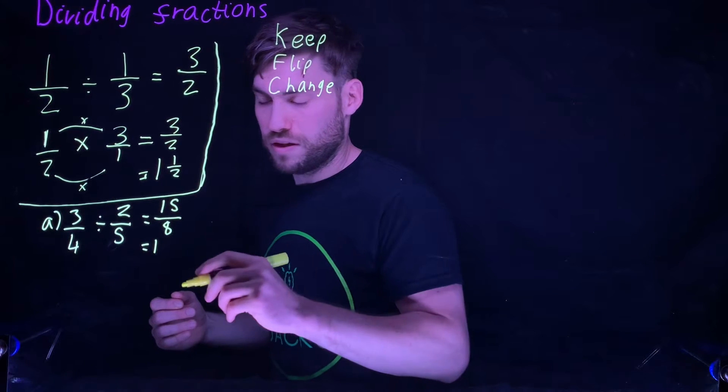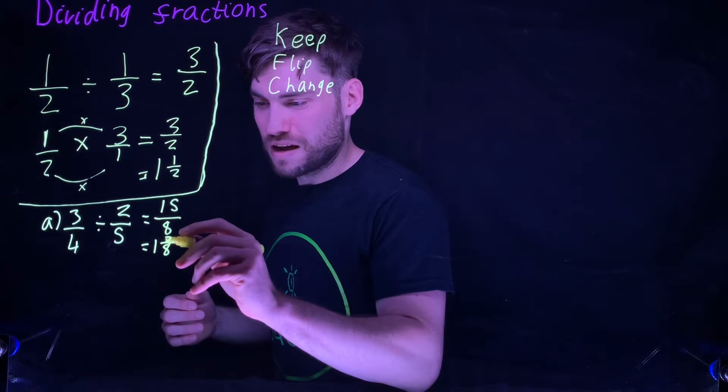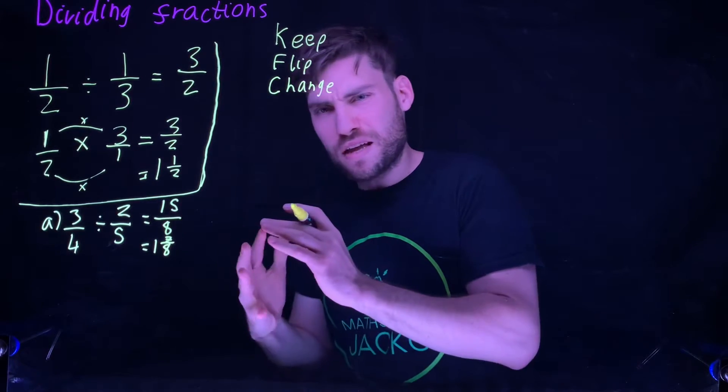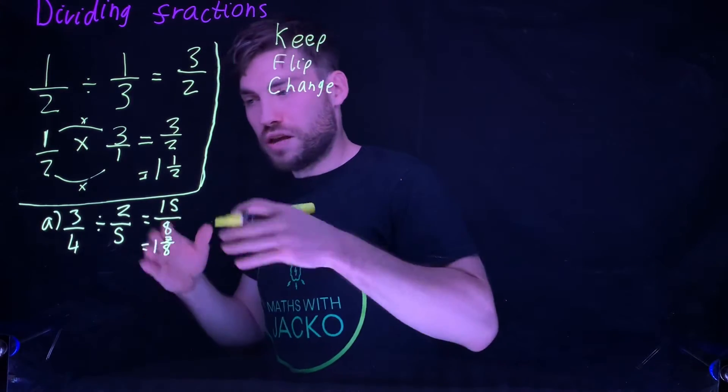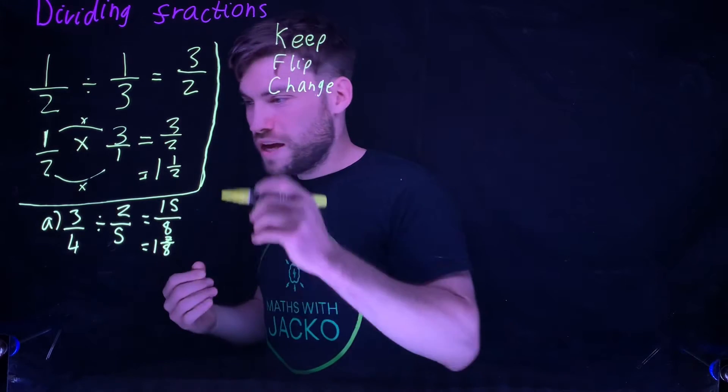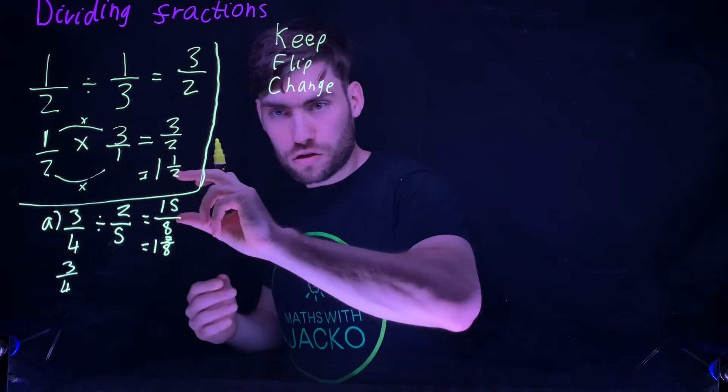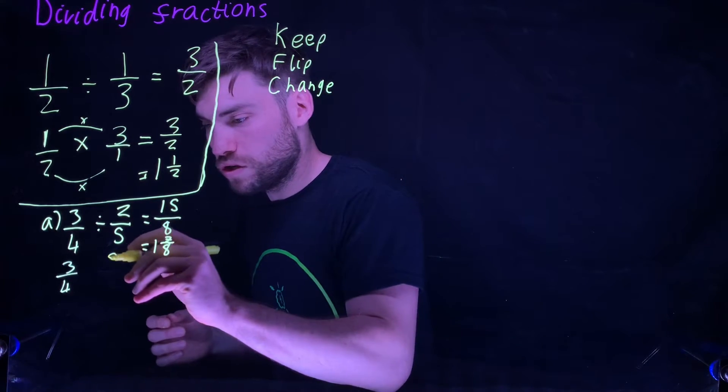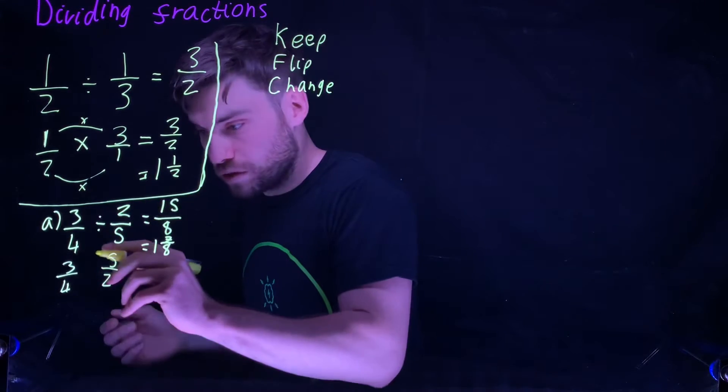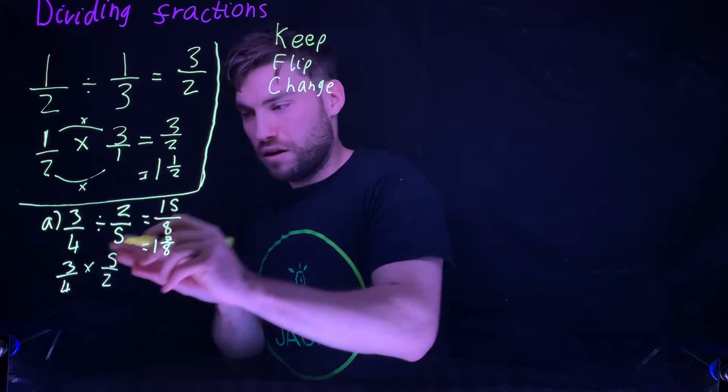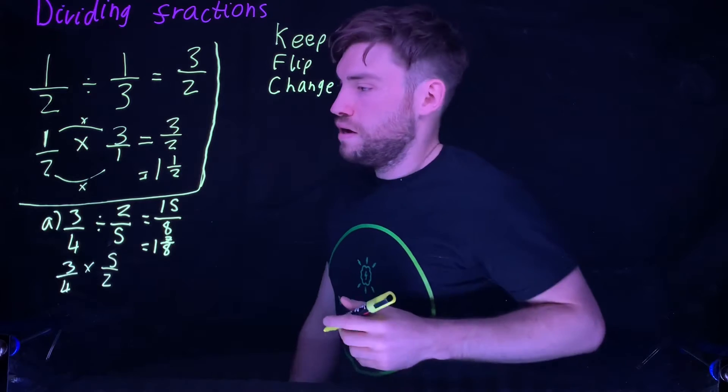The answer is fifteen over eight, which then simplifies to one and seven eighths. Using Keep, Flip, Change or KFC, keep the first one three quarters, we flip the second so it's five over two, and then change the divide to a multiply. So three times five is fifteen, four times two is eight.